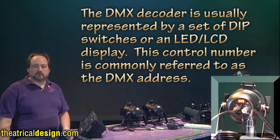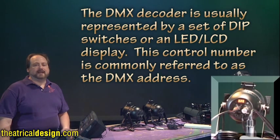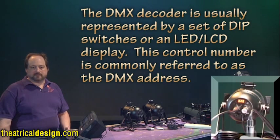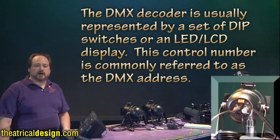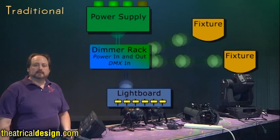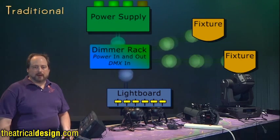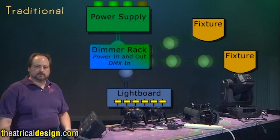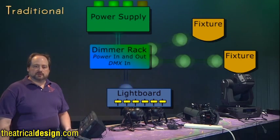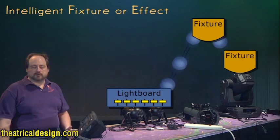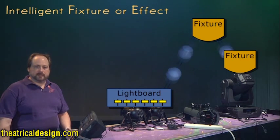The DMX decoder is usually represented by a set of DIP switches or an LED LCD display. This control number is commonly referred to as the DMX address. Traditionally, light boards send signals to dimmer racks, which would then control the power being supplied to light fixtures. Now, many fixtures, whether they be lights, color scrollers, effects wheels, or fog machines, can be controlled by DMX whether a dimmer is involved or not.